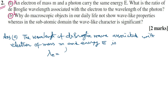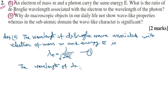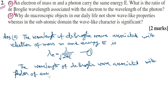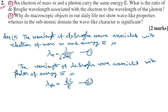Lambda of electron equals h upon square root of 2mE — this is relation number one. The wavelength of the de Broglie wave associated with a photon of energy E is lambda of photon, which equals hc by E — this is relation number two.